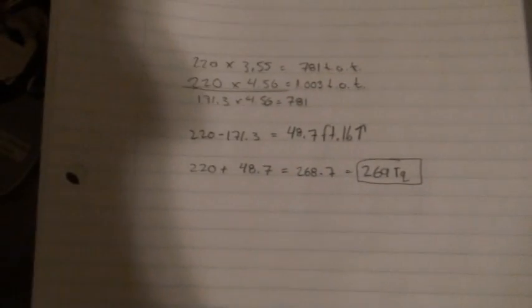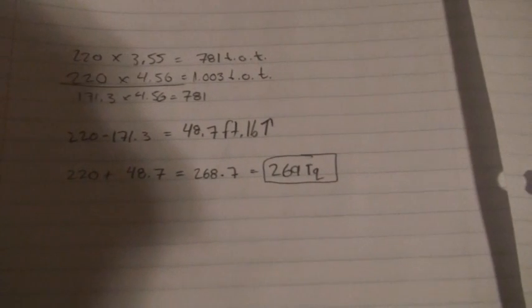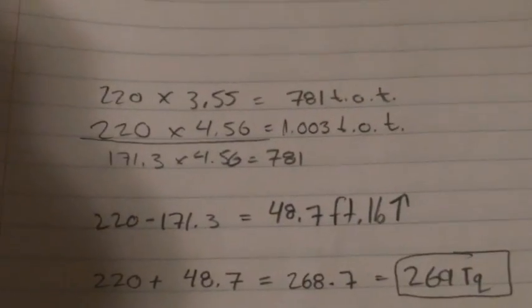So, if you were to do 4.56 gears, with 4.56 gears, I would increase my torque by 48.7, which would bring me from 220 stock to 269 foot-pounds of torque with 4.56 gears. So, here's the equation.